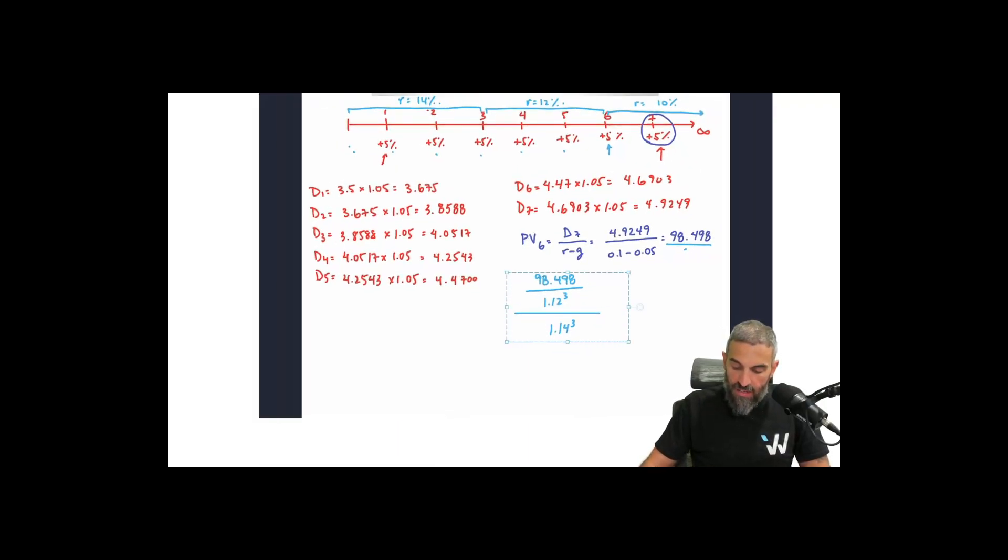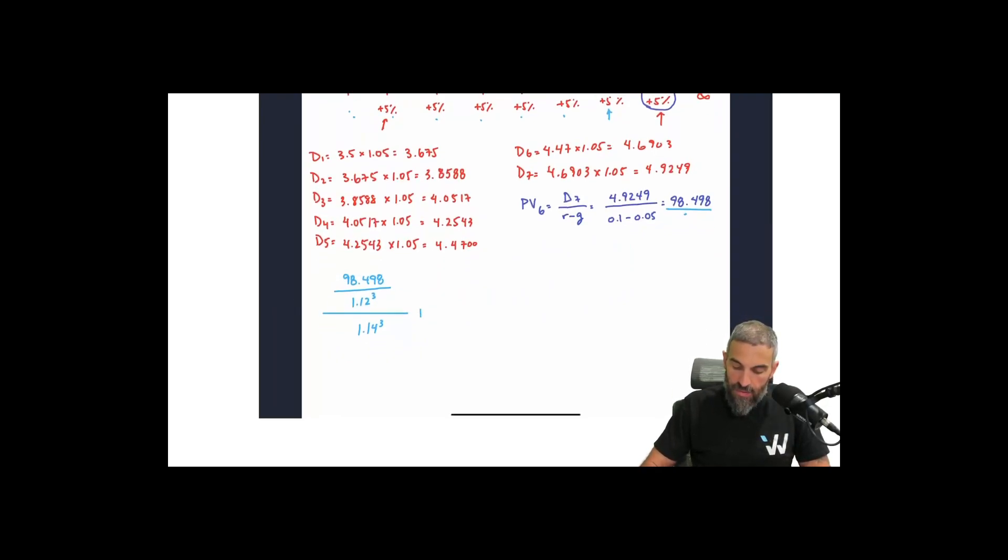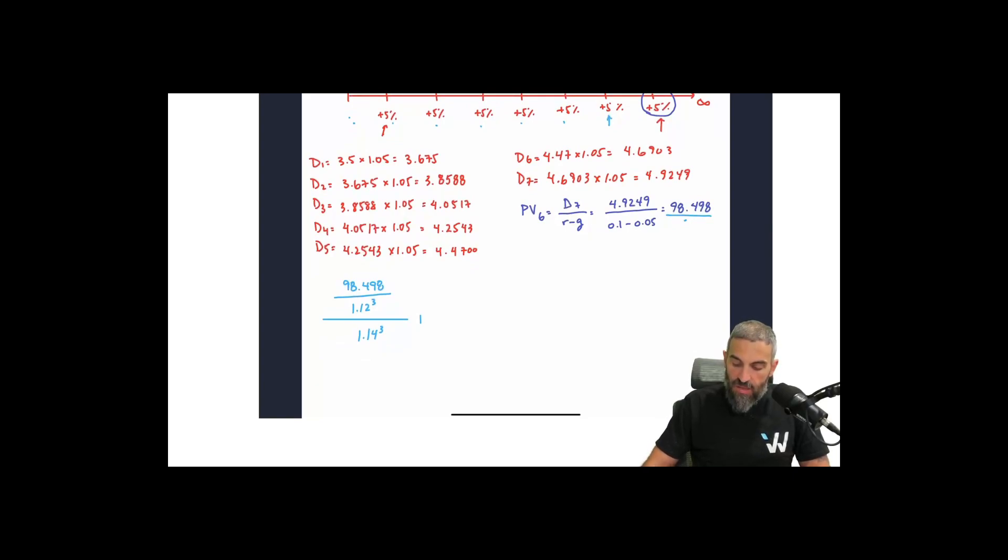Now we're going to repeat that for every one of those other dividends. And we'll start from the right. D6. D6 is at the same point in time as PV6. So it's going to basically undergo the exact same discounting, right? 12% for 3 years, 14% for 3 years. So what you can actually do here is add this one, add your dividend 6 to the numerator here, since those are both going to be discounted equally.